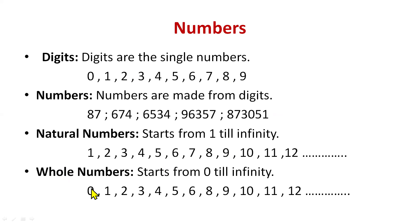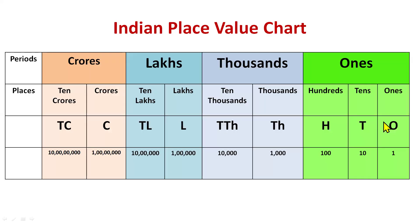Now let's revise the Indian place value chart. We have four periods: under the ones period we have ones, tens, and hundreds. Under the thousands period we have two places — thousands and ten thousands. Under the lakhs period we have lakhs and ten lakhs. Under the crores period we have crores and ten crores.